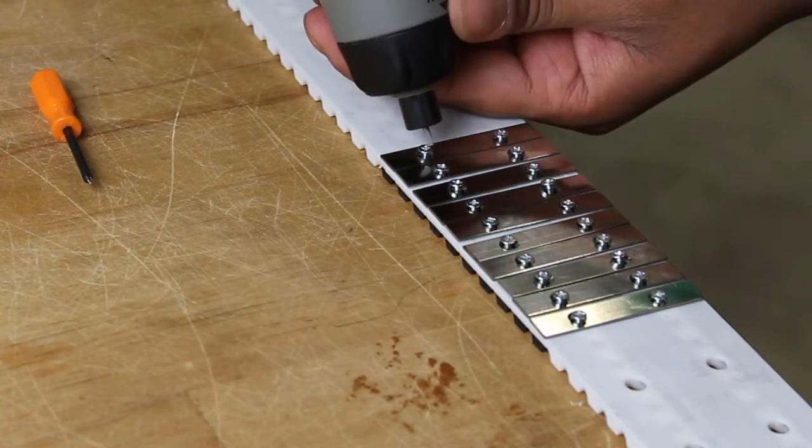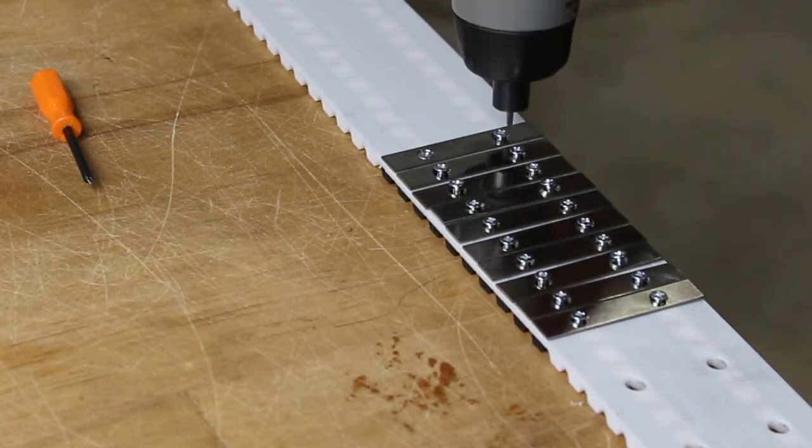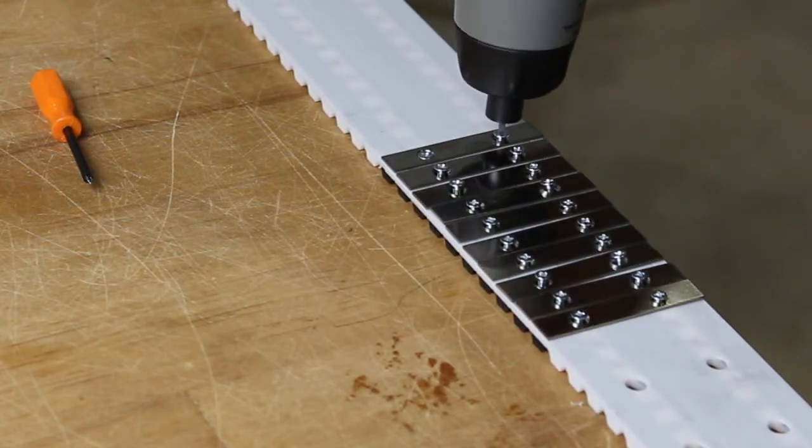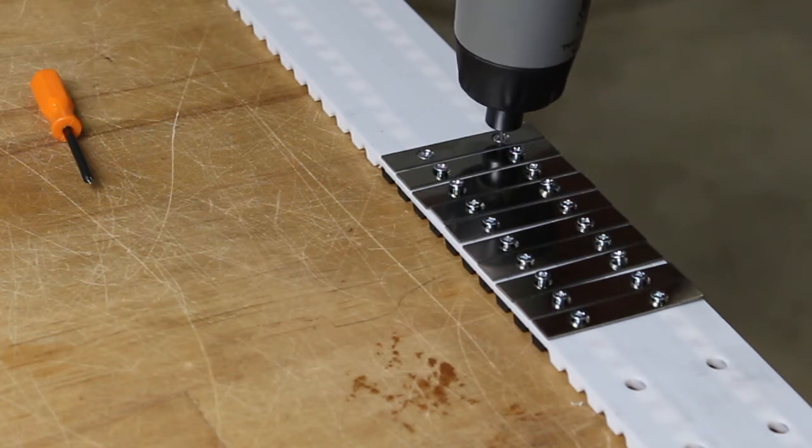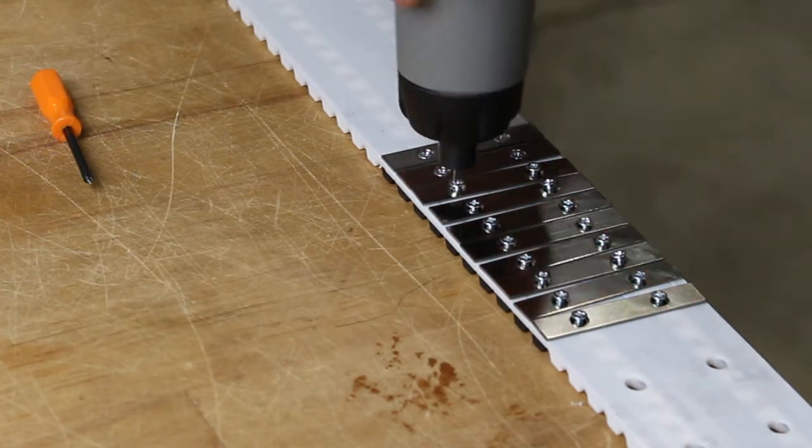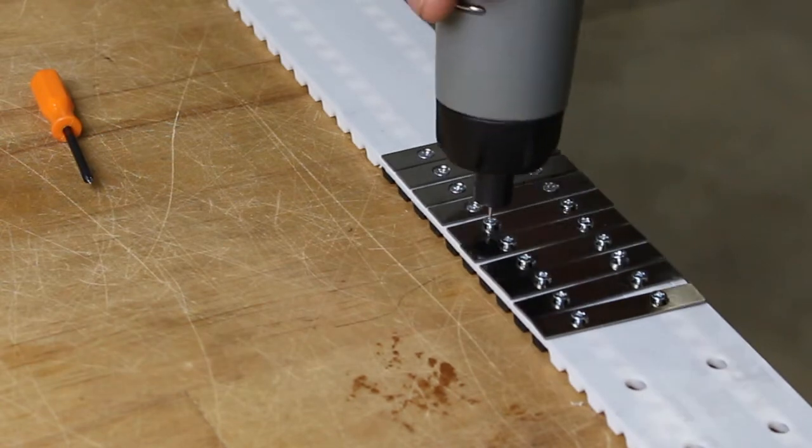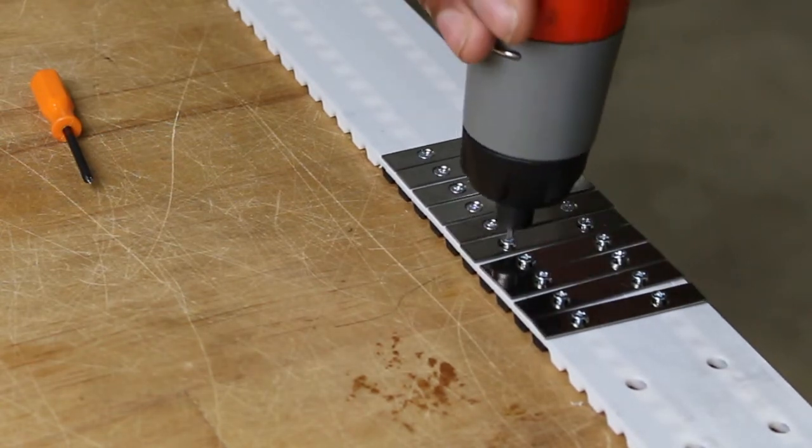As you can see here, once we finish hand tightening all of the plates, we will then use the electric screwdriver to finish the installation process. It is important to tighten the plates down completely until they are pressed firmly against the back of the belt. This will ensure that the plates do not come loose or ride up while going around the pulleys.